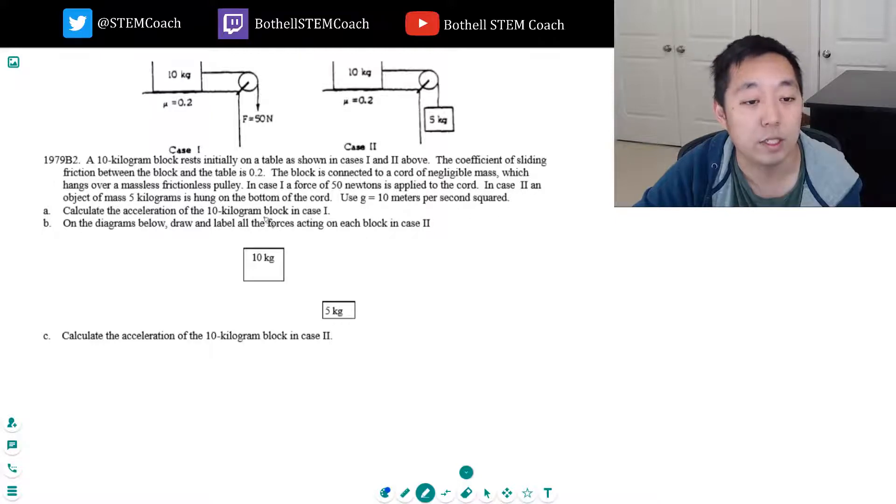Calculate the acceleration of the 10 kilogram block in case 1. Straightforward enough. This 50 newtons translates over to here, so this one is also 50 newtons because all it's doing is redirecting the force.